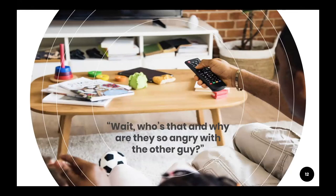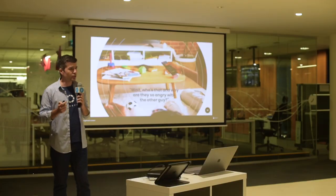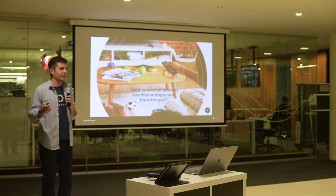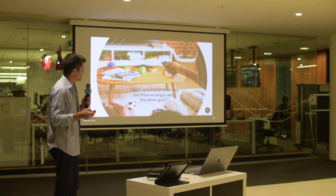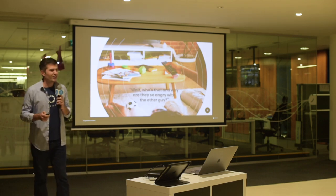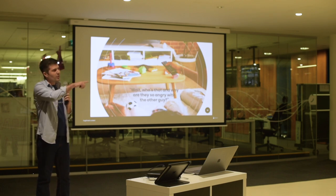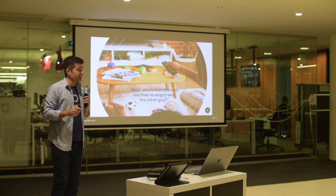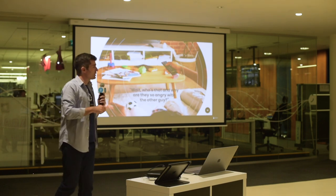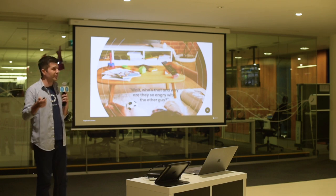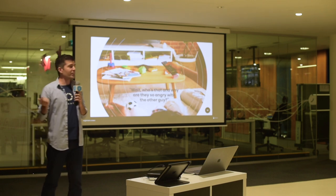You've just introduced your significant other to that program you love. You want them to watch it with you. They sit down and start saying: that character's stupid, I don't like him, why is that one angry with that one? You get irritated — but they don't have the same context you do; they haven't built it up over the years. Unless you can get them to sit through all the full seasons, they're not going to have full context.